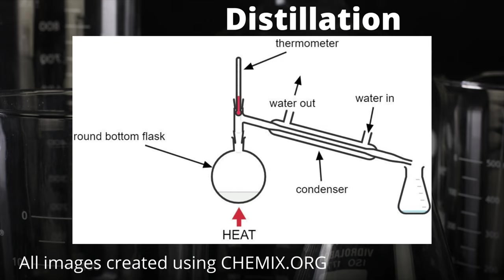The vapours rise up out of the round bottom flask past the thermometer, which allows us to control the temperature of the reaction using our heat source, and then as we enter the tube on the right — labelled as the condenser — the condensing tube has a cold water jacket around the outside of it. This causes any vapours passing through it to condense and then drip down and get collected in the conical flask. You must be able to draw a distillation apparatus for your exam using all of the correct labels shown on screen now, so that's definitely something you should practice.